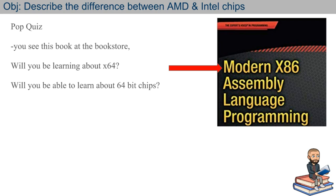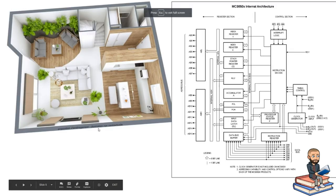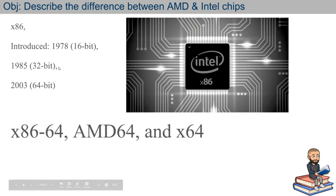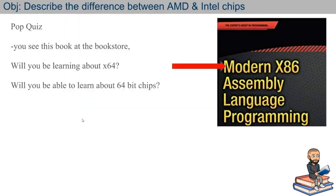Let's think about a pop quiz. I'm saying that x86 is an architecture. Let's say you're in a bookstore and you see 'Modern x86 Assembly Language Programming.' Going back to our dates: in 1978, x86 was used for 16-bit systems; by 1985 it was 32-bit; and ever since 2003 — I'm making this video in 2019 — x86 is using 64-bit systems. So the pop quiz question is: will you be learning about 64-bit systems if you read that book?